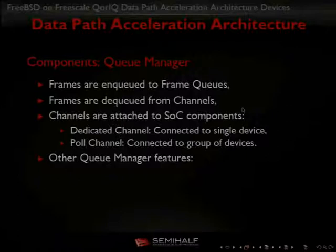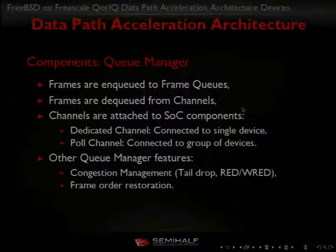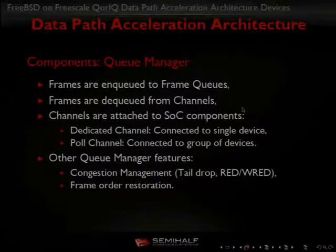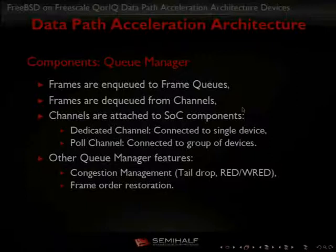Other queue manager features include congestion management — if a queue becomes too long, some packets can be dropped. There is also frame order restoration, so we can keep the order of packets processed in various components of the system. For example, if packet 1 goes to the security accelerator and packet 2 goes to the processor, regardless of processing completion time, on the output we have processed frames in the same order.